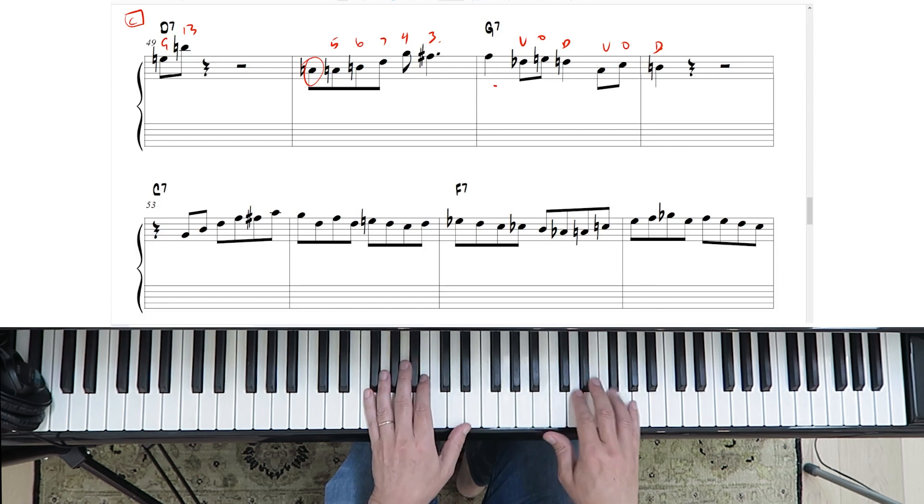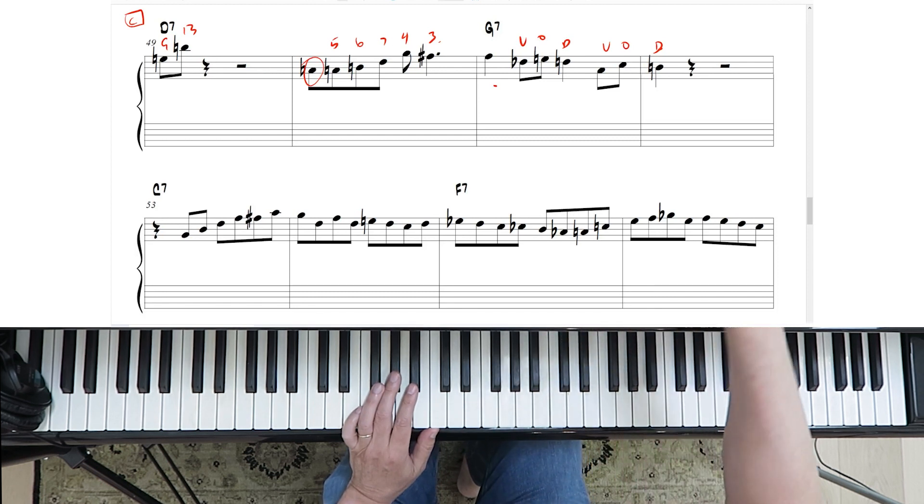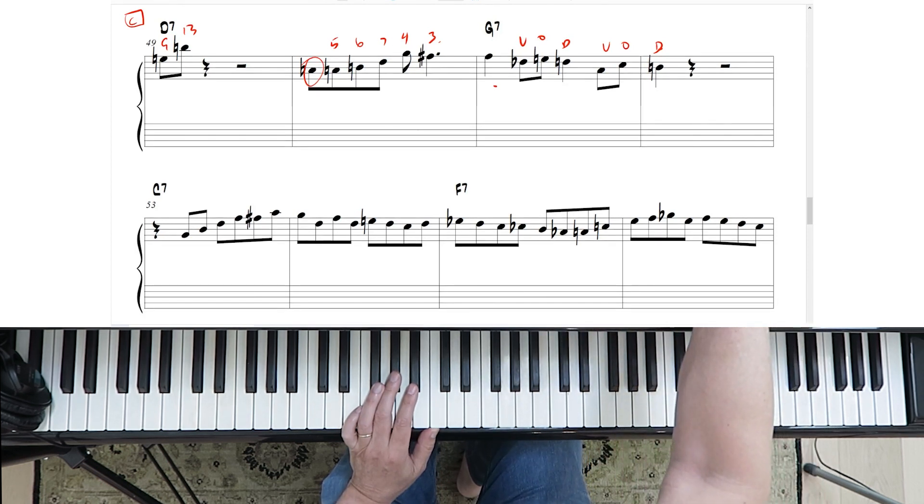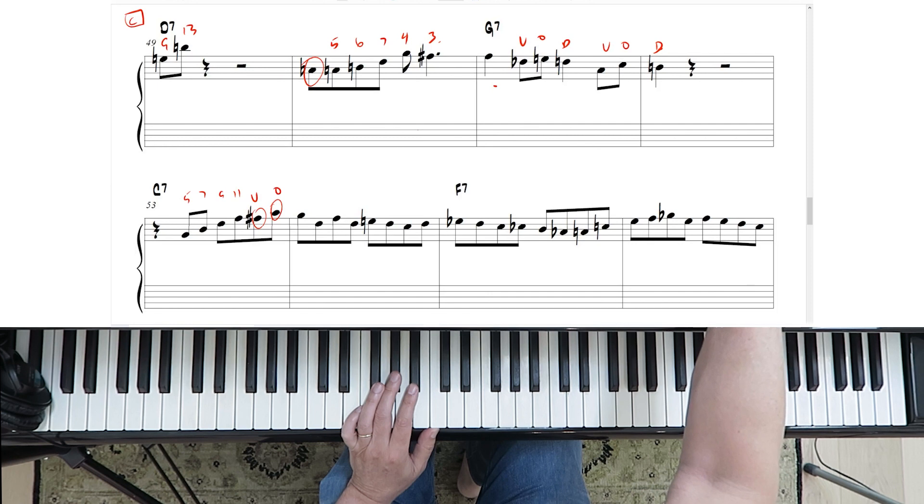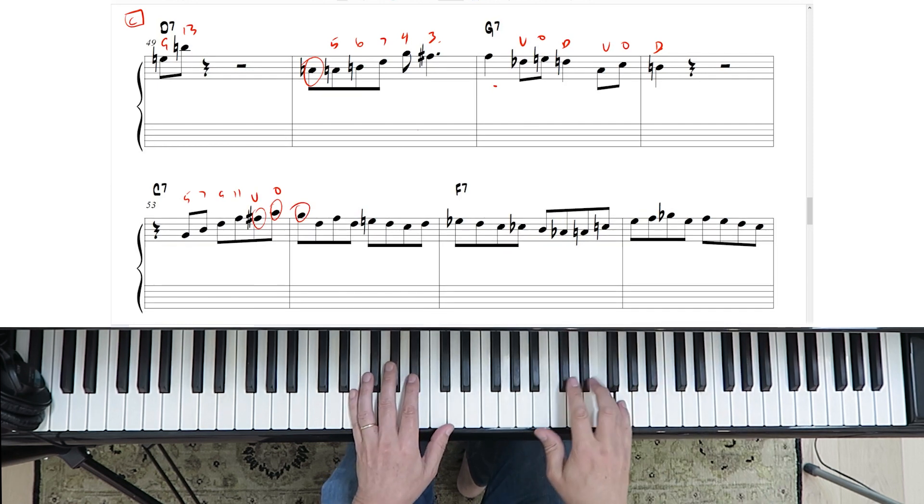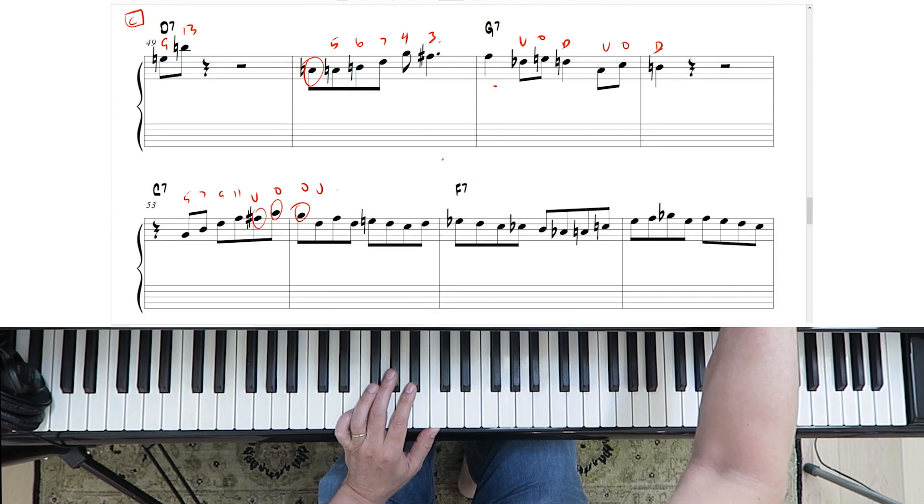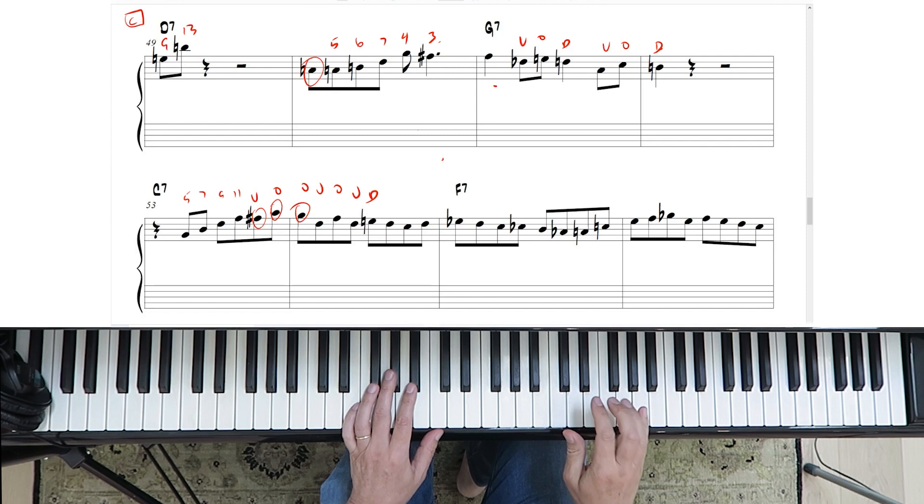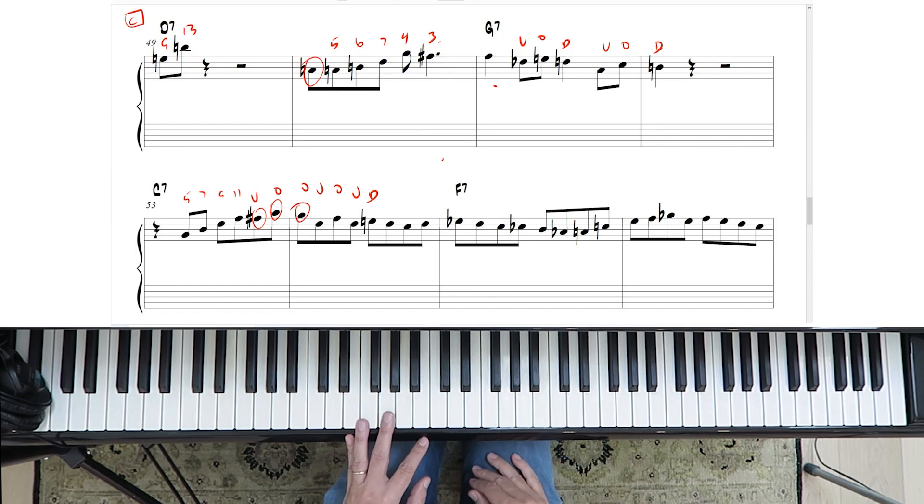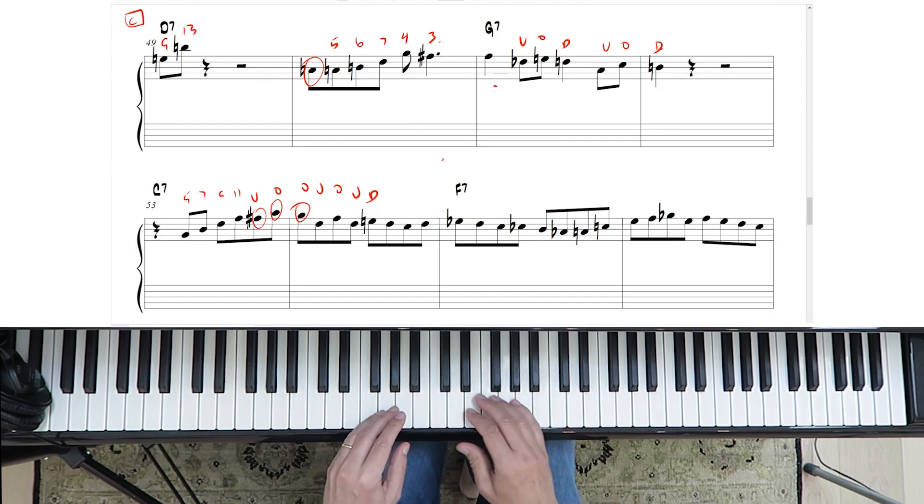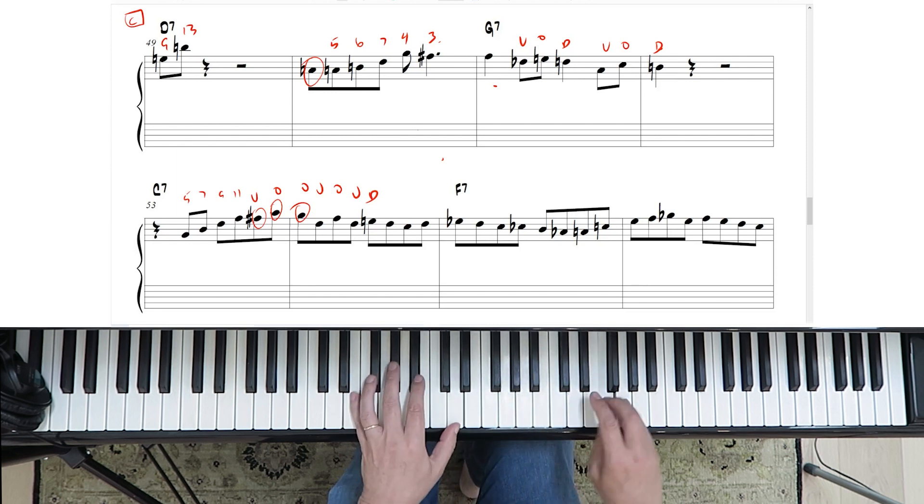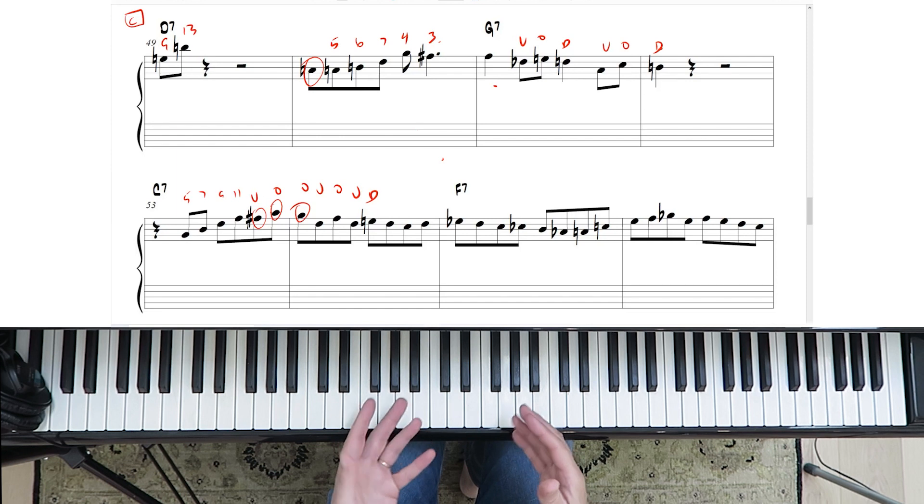And then this really nice long bebop line coming up here. So he starts off like C7. You've got the 5th, the 7th, the 9th, the 11th, and then passing note, under, over, and destination. And this is over, under, over, under, destination. Right? A lot of bebop players make the mistake of not hearing that over and under sound. A lot of times it's just scales to them. So you see the difference? It's like as soon as you do this under and over stuff, it starts to make more sense as far as bebop lines.